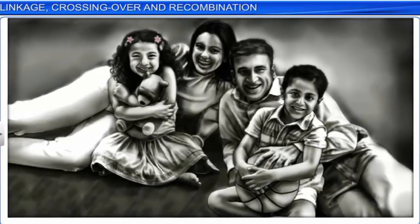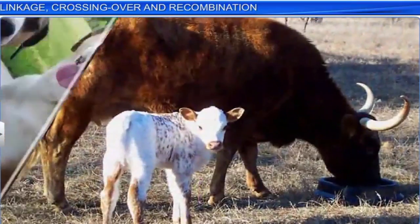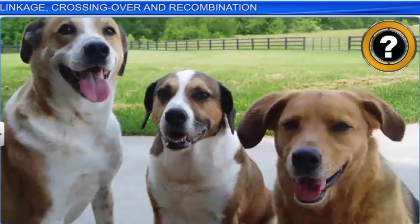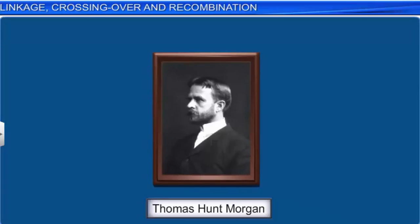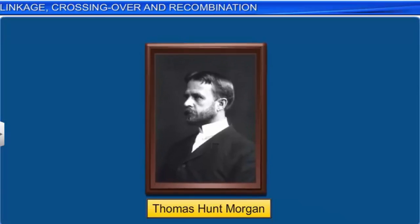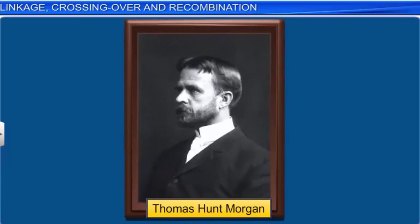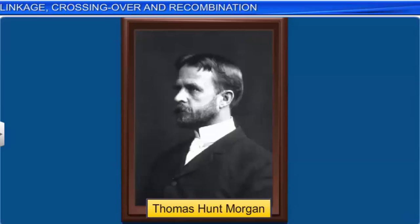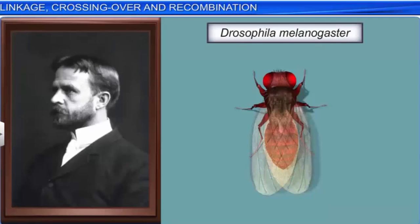Children look different from their parents and so do the young ones of other living organisms. To find the answer to the question of why such variations exist, Thomas Hunt Morgan and his colleagues tried to verify the chromosomal theory of inheritance through various experiments. Morgan chose the tiny fruit fly, Drosophila melanogaster, for his research.